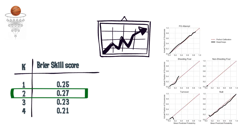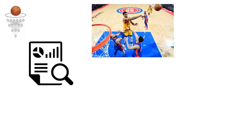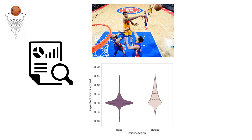Furthermore, the reliability curves for each class show that the probabilities output by Deep Hoops are well calibrated. As a simple case study, we compare the expected points added from an assist versus a regular pass. As you can see from the violin plots, assists add on expectation more points, as one might have anticipated. This provides additional evidence for the practical validity of the model.